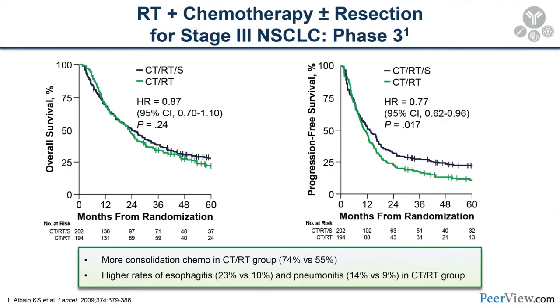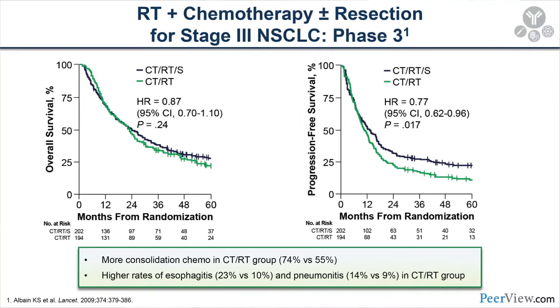Setting the stage for treating stage 3 lung cancer always prompts a lot of debate. Historically, the Albain study — the intergroup study — showed that patients treated with chemotherapy and radiation had equivalent overall survival to those treated with chemotherapy, radiation, and surgery. Many interpret this as suggesting surgery has a minimal role, that it's largely a systemic disease and local control can be equivalent with radiation. I understand that argument, but there's nuance — progression-free survival showed an advantage with surgery, with a hazard ratio of 0.77.